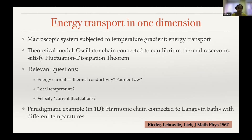The relevant questions are: how does the energy current behave, what is the thermal conductivity, does Fourier's law hold, can one consistently define a local temperature, and what are the fluctuations of velocity and current? The paradigmatic example of such a system, studied in 1967, is the harmonic chain connected to Langevin baths.